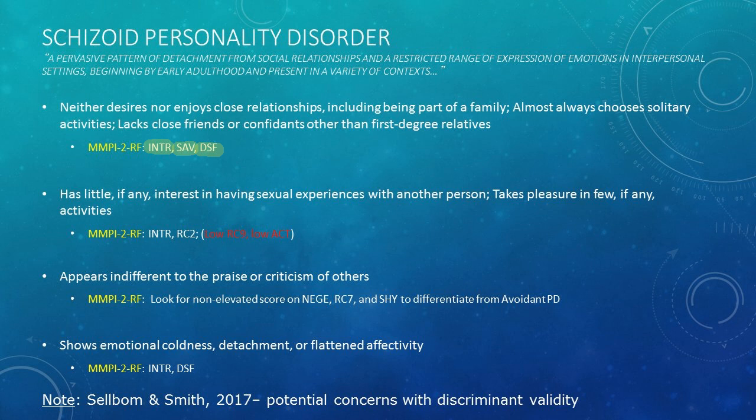For criteria relating to little interest in sexual experiences and taking pleasure in few activities — anhedonia — the relevant scales are again introversion/low positive emotionality, and in particular RC2, which is low positive emotions. Low RC9 and low activation were expected conceptually to be relevant to schizoid PD, but this expectation turned out to be false — we have failed to find support for either of these scales being related to schizoid personality disorder in any of our research studies, so they are highlighted in red text.